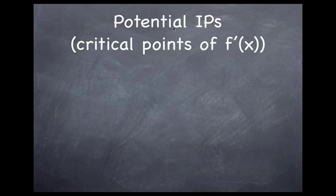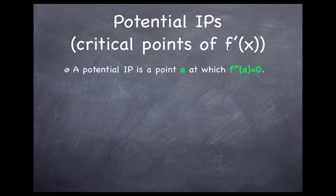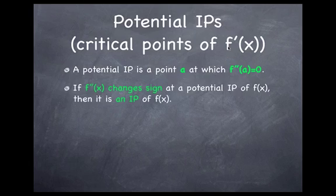So that means, to find potential inflection points, which is potential mins and maxs, we just look for the critical points of the function f'. So a potential inflection point is a point A at which f'' is equal to 0. This will not necessarily be an inflection point, but if f'' changes sign at the point, then we know that it is an inflection point.